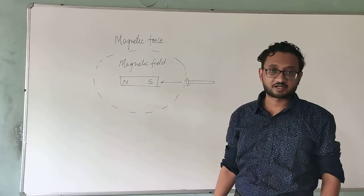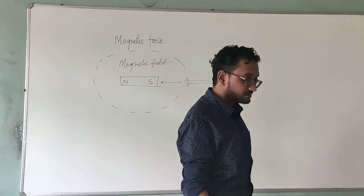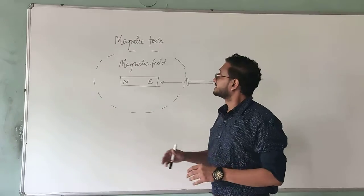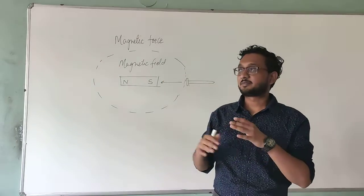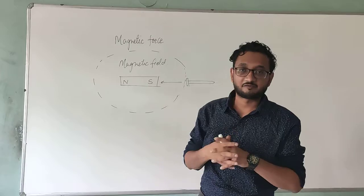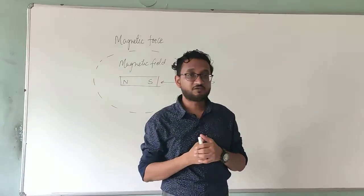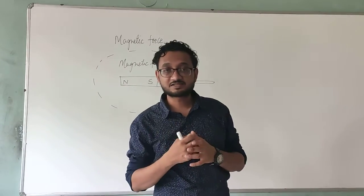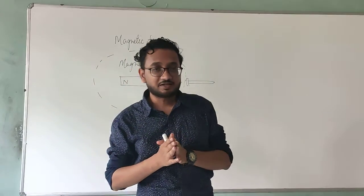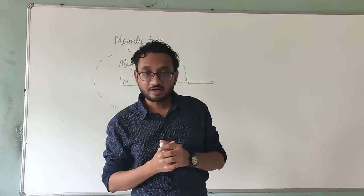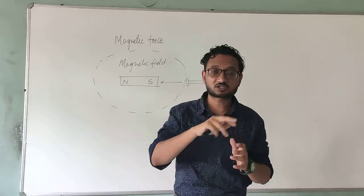This magnetic field creates a magnetic force. As we know, any type of force is a vector quantity which has a particular direction. Similarly, this magnetic field is made up of invisible lines called magnetic field lines, which actually create the magnetic field and the magnetic force around the magnet.